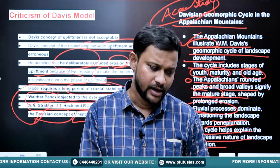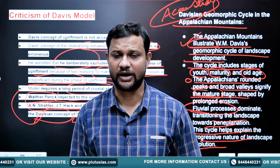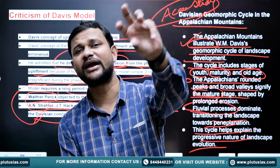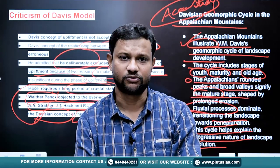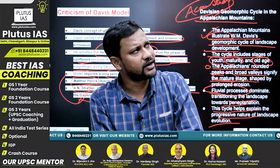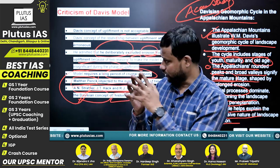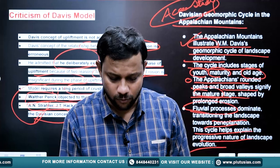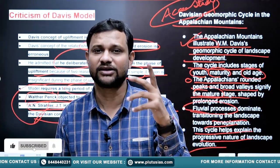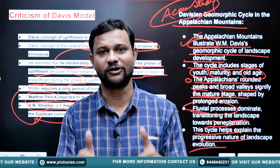Davis has faced criticism even on the end product — the peneplain versus pediplain — and on various aspects of the process. But even now we don't have a model that competes well with Davis's model. Penck's model is also good, but there are unanswered questions with that too. So Davis's model of erosion — the geomorphic cycle — remains foundational. If you want further topics explained like this, let me know in the comment box. Thank you and all the best.